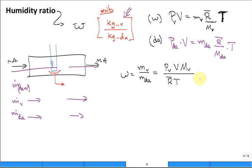can I do partial pressure of the dry air, volume, molar mass of the dry air, divided by R bar T? Do you see what we did? Now, can we cancel some terms? I hope we can. R bars go, temperatures go, the volume goes, and we're left with that humidity ratio.